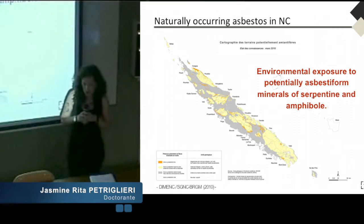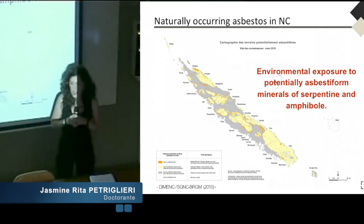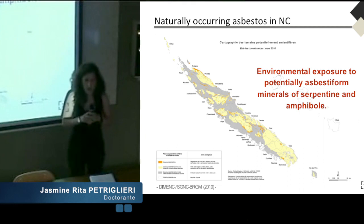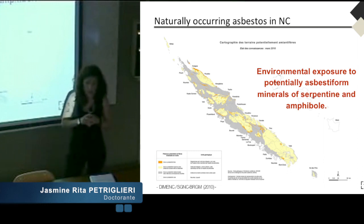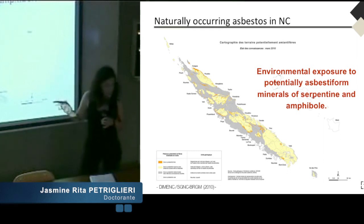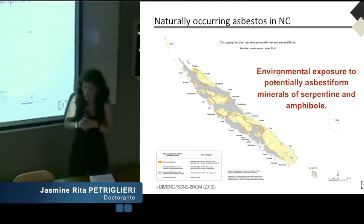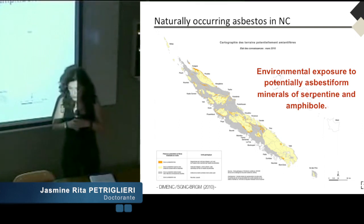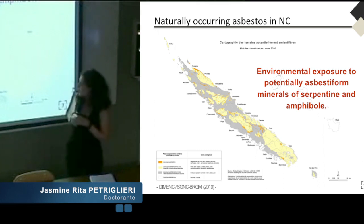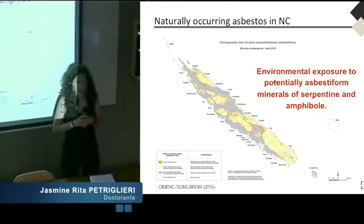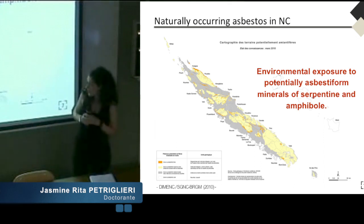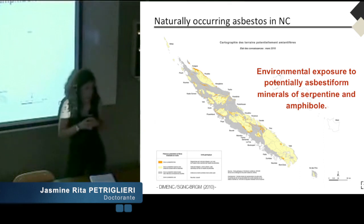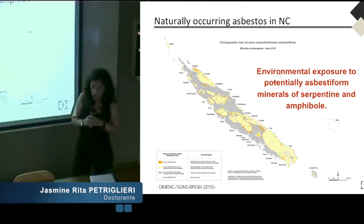The environmental exposure to asbestiform minerals in New Caledonia is a huge health concern because naturally occurring asbestos is present in most parts of the geological units — the ultra-basic geological units — of New Caledonia. The map shows, in yellow and orange, the potential presence of asbestiform minerals. In addition, New Caledonia is one of the most important producers of nickel from lateritic ore deposits, and in this context mining extraction must deal with the natural occurrence of these mineral fibers.